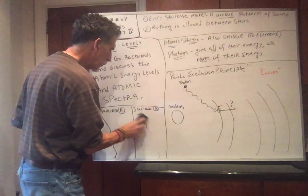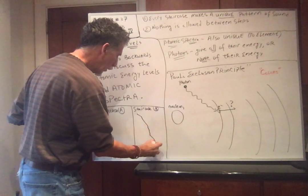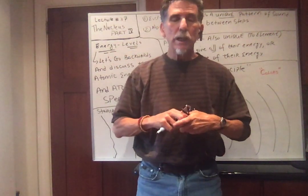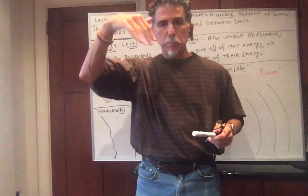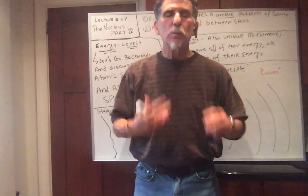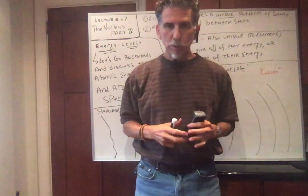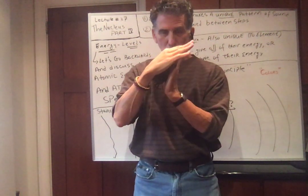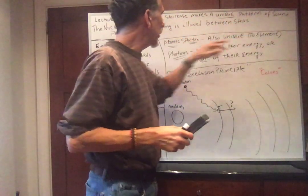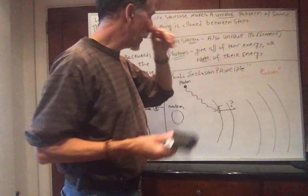By the same token, I can make staircase B, and it has a different pattern — also crooked but a different pattern of crookedness. So if I threw a ball up staircase B, it would make a different pattern of sound. Whatever sound it made, I know it's always staircase B. So every staircase has its own pattern of sound, or its own energy levels. And it's important to notice that the ball can never be between the steps. Every staircase makes a unique pattern of sound and nothing is allowed between the steps. So atomic spectra also have unique sound or energy.